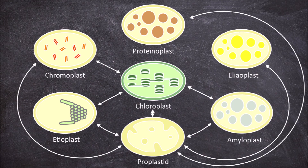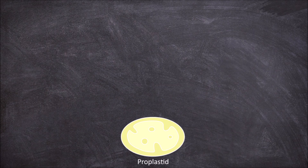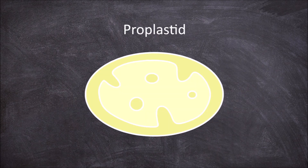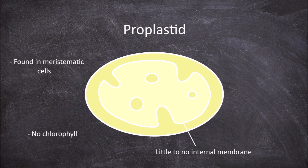The first plastid we will look at is the proplastid. They are the precursor form for most other plastids. The other plastids are also sometimes able to reconvert back into proplastids. Proplastids are found in the meristematic cells. They contain no chlorophyll, have little to no internal membranes, and do not possess all the enzymes required for photosynthesis.